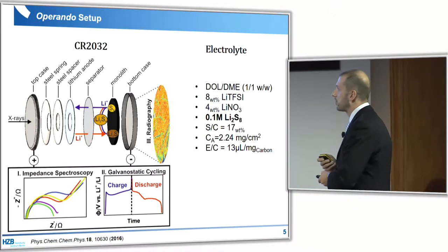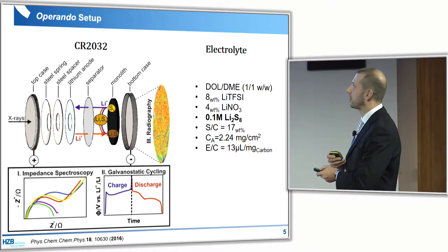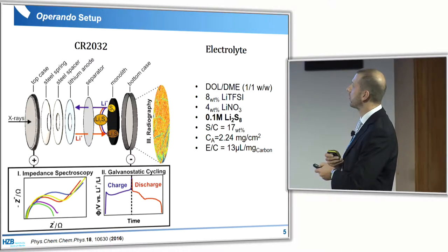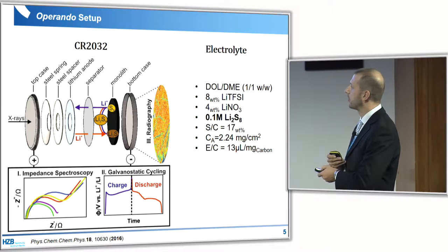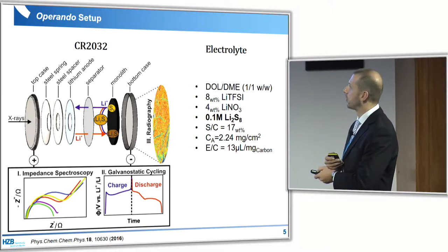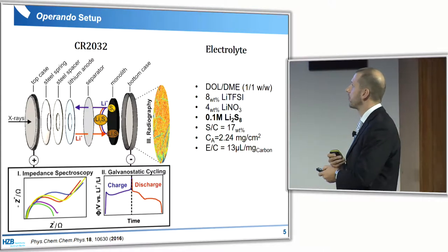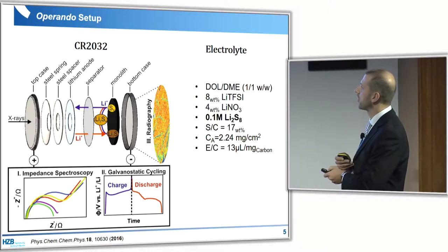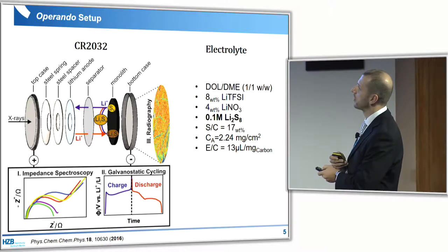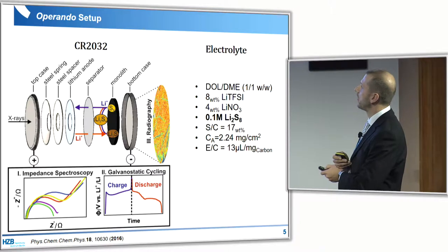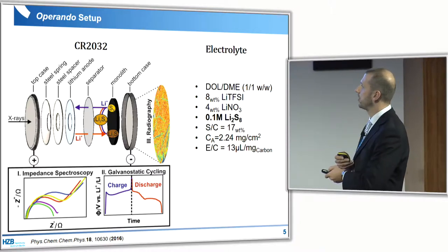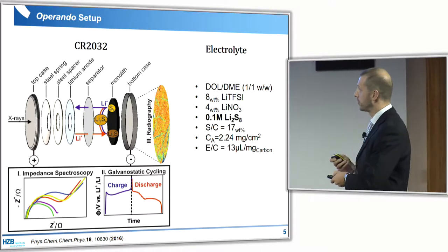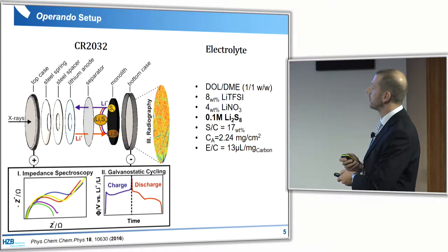This is our operando setup, version number three. It is not optimized for dead volume or electrolyte-to-carbon ratio, but it is one of the first cells that works very well in that the charge-discharge curves look acceptable. This is a standard CR2032 coin cell with a spring and a steel current collector, a lithium anode in an eight-millimeter hole in the middle, a standard Celgard 2500 separator, and our cloth-like material cathode. We perform radiography, charge-discharge, and impedance spectroscopy and combine everything to draw conclusions.